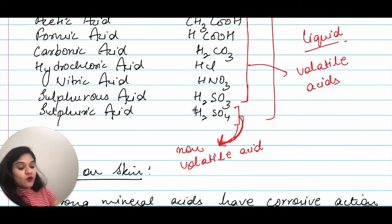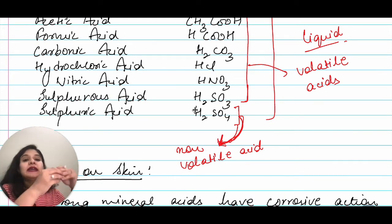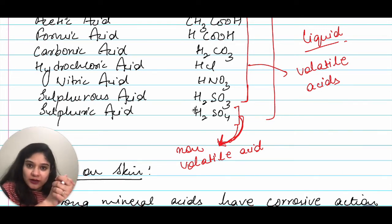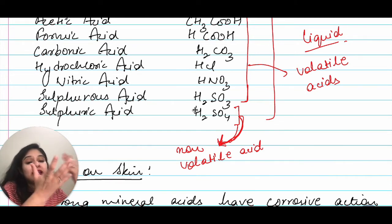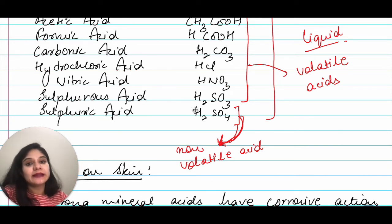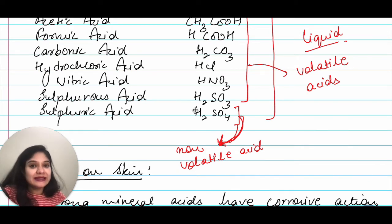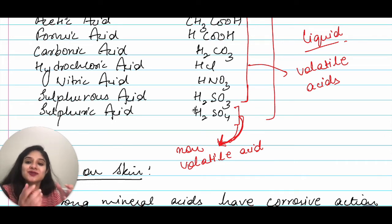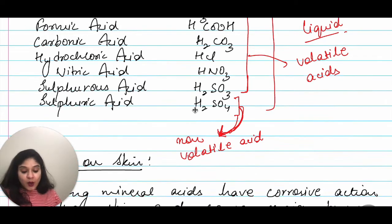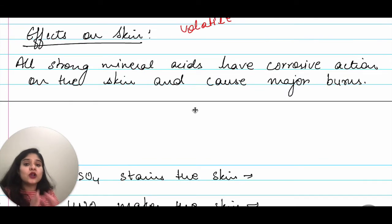Volatile acids can easily vaporize at room temperature or when heated. If you use them in preparation reactions with an open container, you may lose a large portion of the acid. Since preparation reactions involve heat, this is an important consideration. Sulfuric acid is a non-volatile acid and does not vaporize easily.